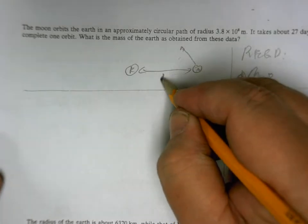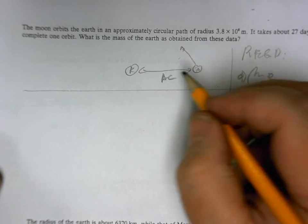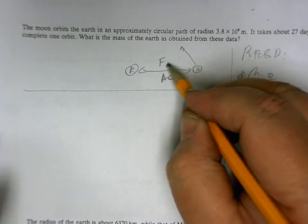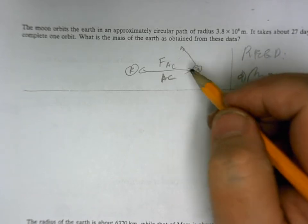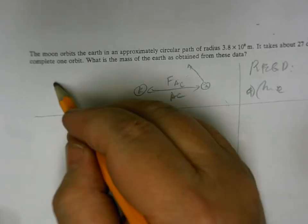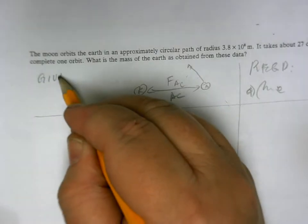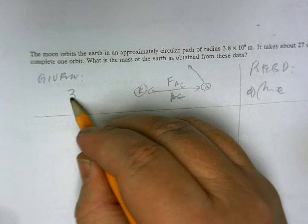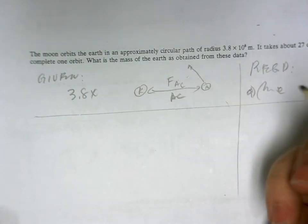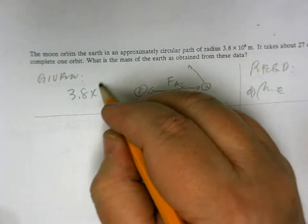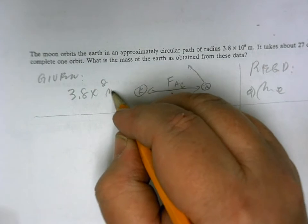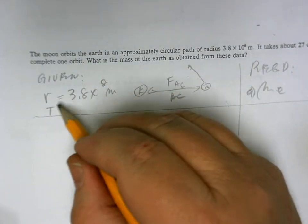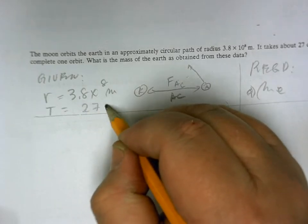And therefore, there is a centripetal acceleration, which is giving a centripetal force. And what are we given? We're given R is 8 meters, and we're also given T is 27 days.